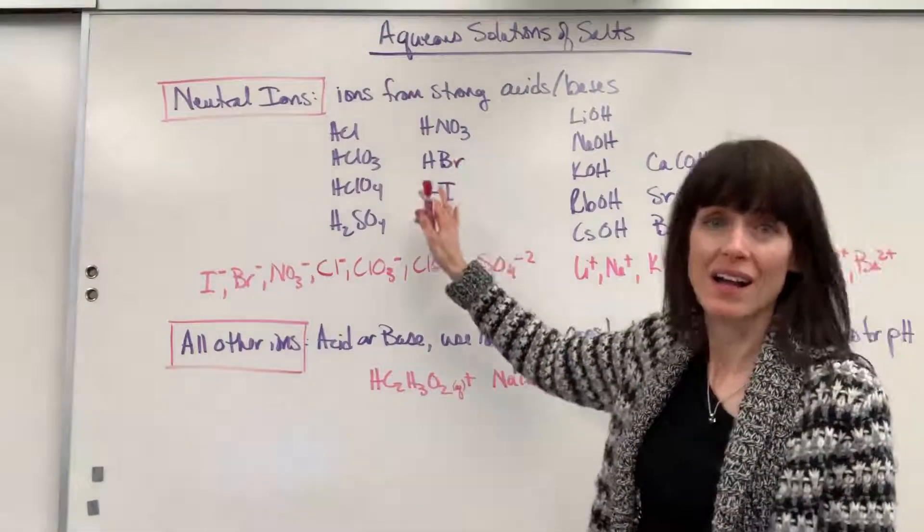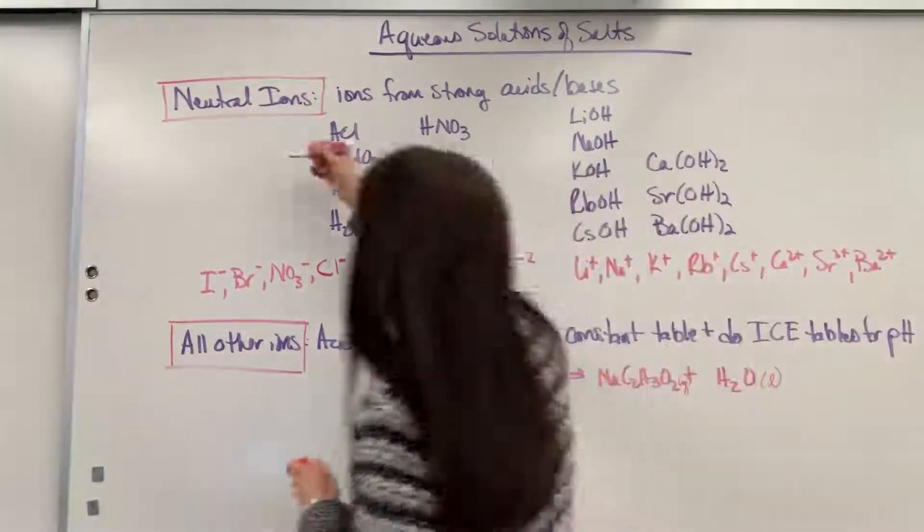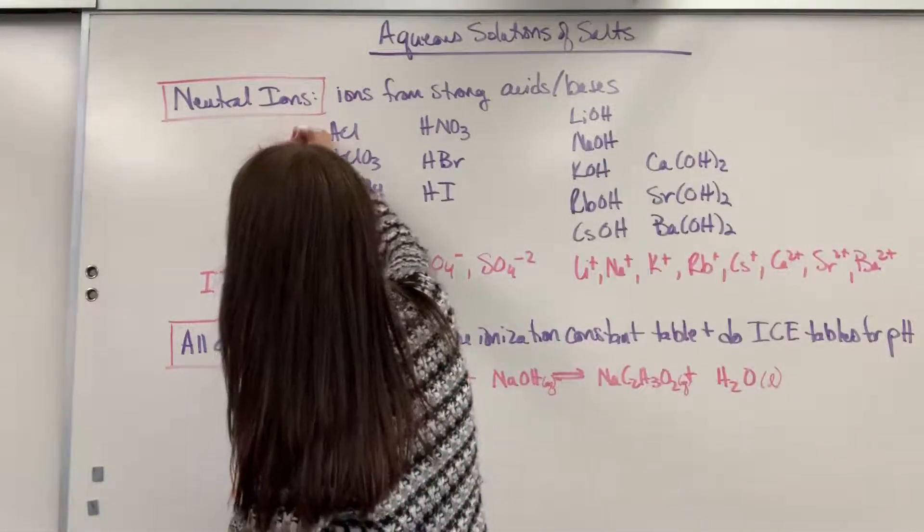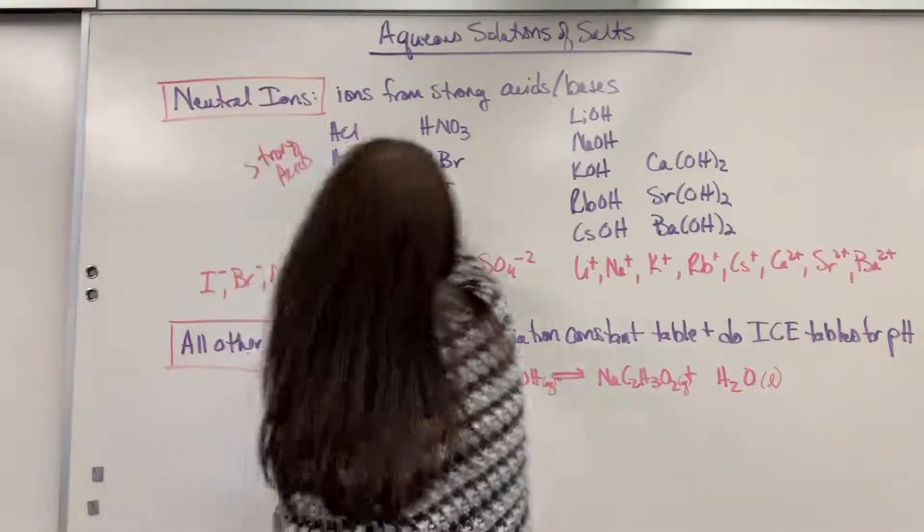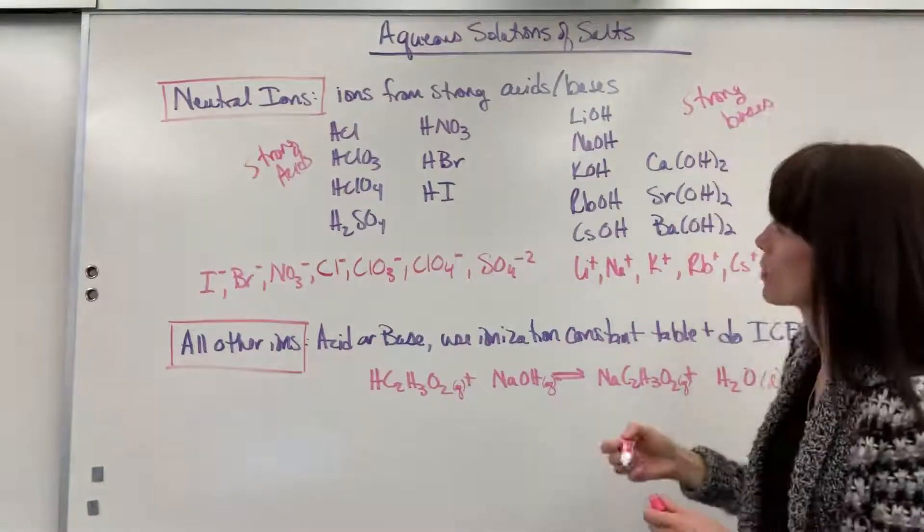you can ignore it. It's just going to be a spectator ion. You can get really fast at this, and it'll save you some time as you're writing your chemical equations. Here are the neutral ions, and here's the trick: it's going to be any ion that comes from a strong acid or a strong base. Here are my seven strong acids that you need to have memorized, and here are your eight strong bases that you need to have memorized.